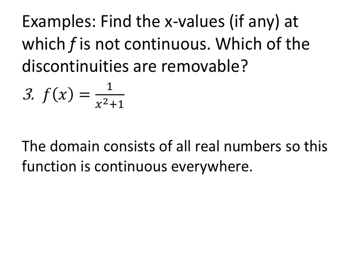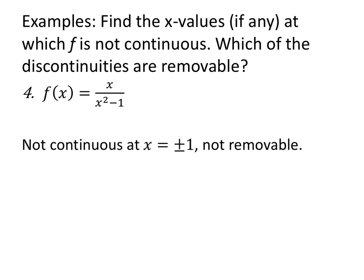f of x equals 1 over x squared plus 1: x squared is 0 or positive, so when I add 1, my denominator is 1 or larger. Therefore, my denominator is never 0. The domain consists of all real numbers, and this function is everywhere continuous. The function f of x equals x over x squared minus 1 is missing domain values of positive and negative 1, so the function is not continuous there. I can't substitute x equals 1 or x equals negative 1, and I can't factor away those discontinuities.